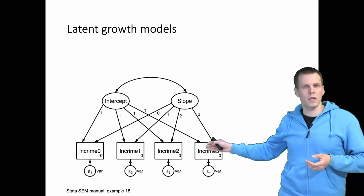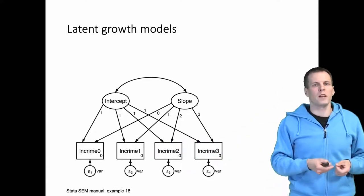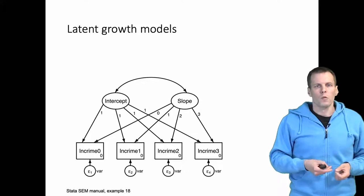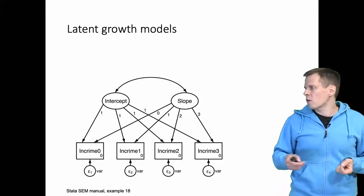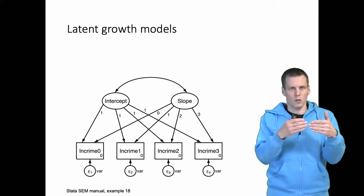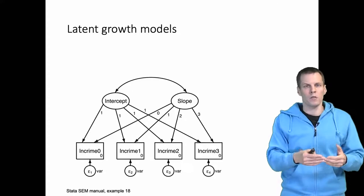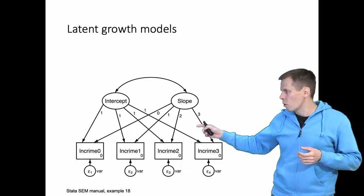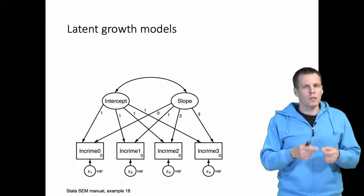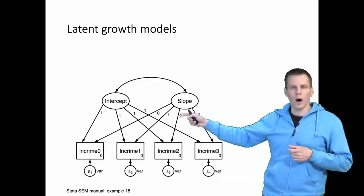We have repeated observations structured as wide form data, so each repeated observation is a different variable. What we are modeling here is the effect of intercept, which is constant. The intercept always has a coefficient of one, and then we have a slope random variable which has effects 0, 1, 2, and 3.